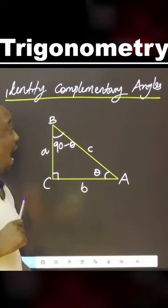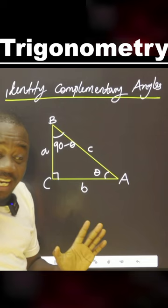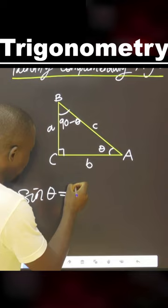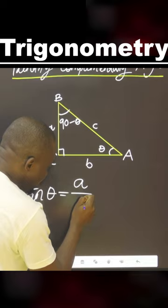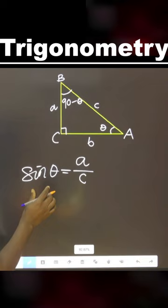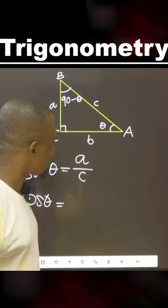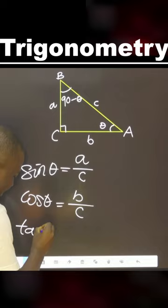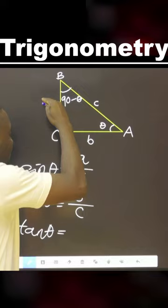Let's look at identity complementary angles. You already know the meaning of sine theta — sine theta is equal to opposite over hypotenuse, the longest line. You also know cos theta, that is adjacent over hypotenuse — the side close to the angle, which is B over C. Then we have tan theta, which is opposite over adjacent.